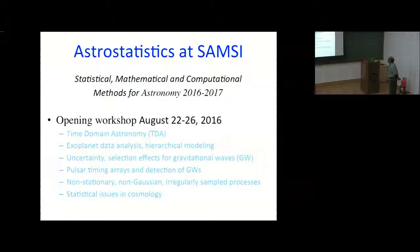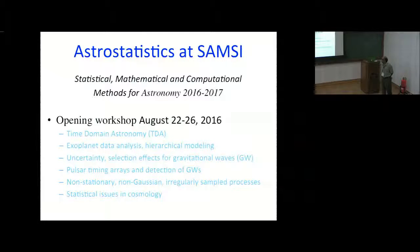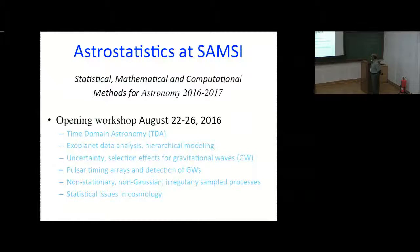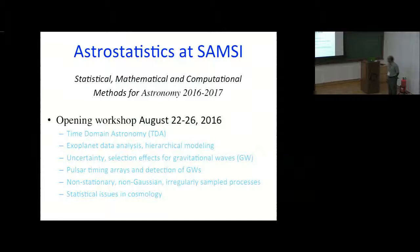We started with the opening workshop in August 2016. The topics covered were time domain astronomy, exoplanets, pulsar timing, non-stationary, non-Gaussian, and irregularly sampled processes. There were several lectures by statisticians on those topics, as well as statistical issues in cosmology.